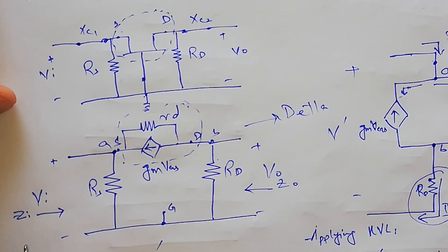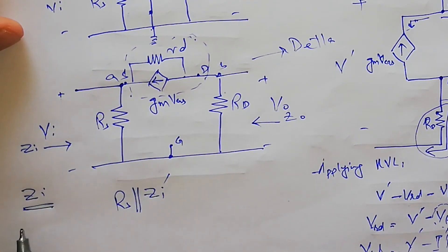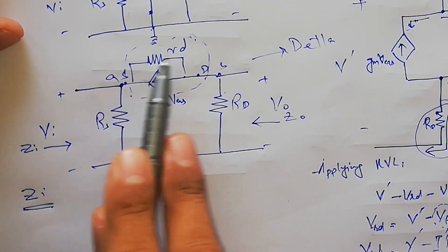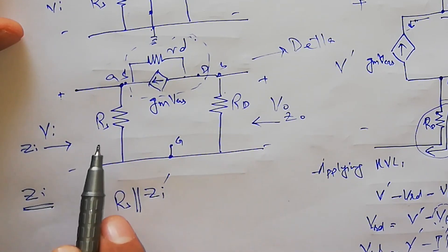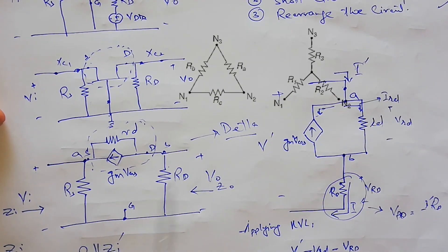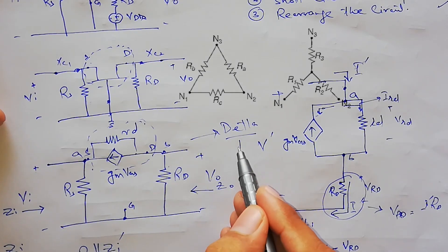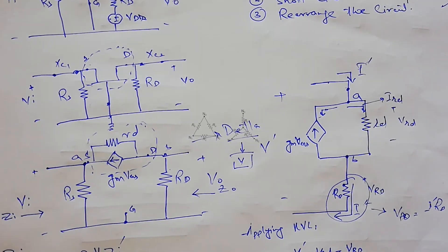As we have to find input impedance, the input impedance as seen from this side is actually equal to RS in parallel with all of these elements. This whole section becomes a delta configuration. To solve using delta configuration is quite difficult — we would need to convert it to a Y configuration, which requires a lot of mathematical expressions and is time consuming. So we are going to apply KVL to understand how it behaves.